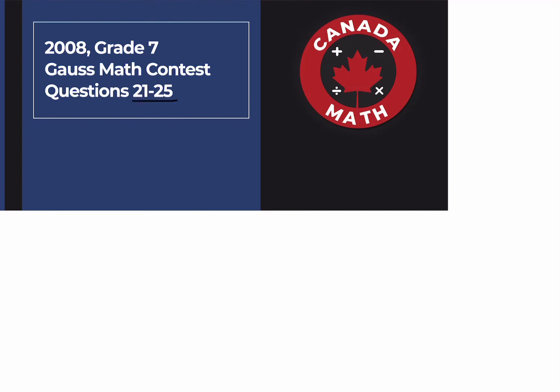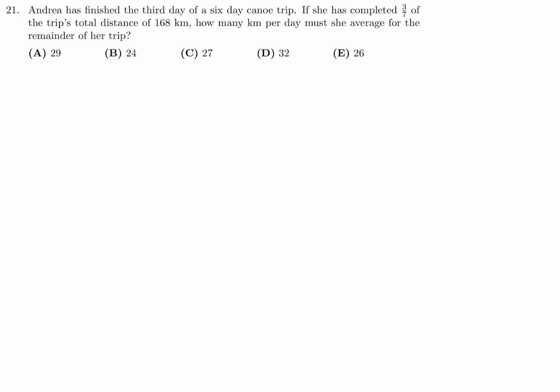Questions 21 through 25 on the 2008 Grade 7 Goss Math Contest. Andrea has just finished the third day of a six-day canoe trip. If she has completed three-sevenths of the trip's total distance of 168 kilometers, how many kilometers per day must she average for the remainder of the trip?